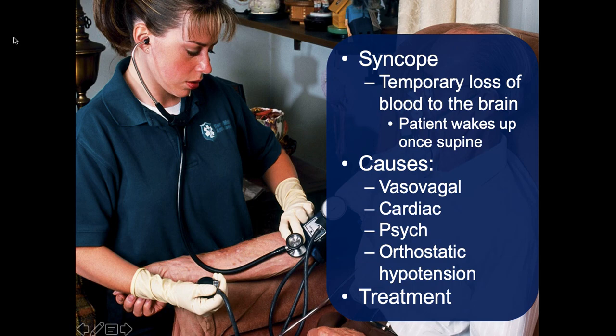Treatment is symptomatic. If they've fallen and hurt themselves, treat those injuries—spinal stabilization, bleeding control. Get a blood sugar and pulse oximetry, and apply oxygen if saturations are below 94%. It's a good idea to take them to the hospital for physician evaluation to rule everything else out. And that concludes Chapter 19.